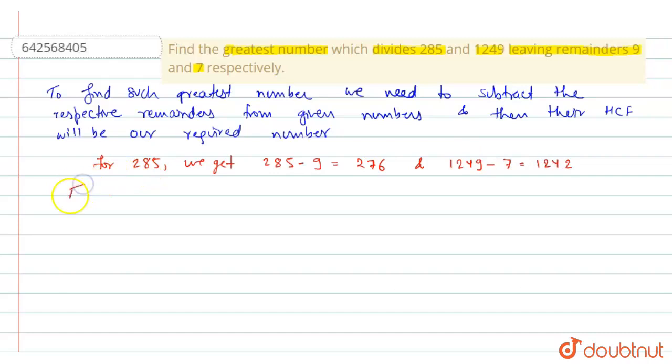Now, for finding HCF, prime factorization method will be used. Therefore, 276 is equal to 2 into 2 into 2 into 3 into 23, and 1242 can be written as 2 into 3 into 3 into 3 into 23.